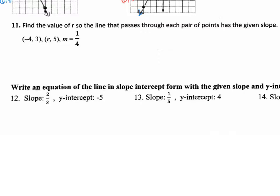This is video number 2 and we're picking up right where we left off, number 11 on this practice test. Number 11 tells you to find the value of r, so there's a missing value right here — it's a variable r — and we need to know what number belongs here so that when we calculate the slope on these two points, we get the answer m equals one-fourth.